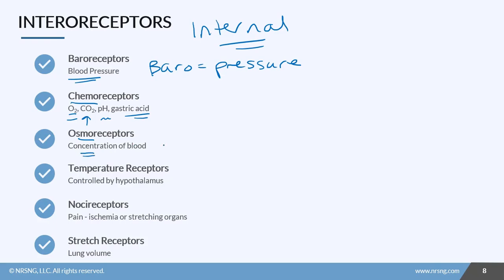Now osmoreceptors detect concentration of the blood, so basically they're looking at how much water is in there. Is there enough water, is there too much water? Temperature receptors are going to be able to detect our internal body temperature, so we're talking about core temp here. And they're going to send that signal to the brain. And our temperature is controlled by our hypothalamus. Then we also see nociceptors. Nociceptors are our pain receptors. So we can see these in the skin, but also inside the vital organs. So if your organs are stretching or if they have a lack of blood flow or ischemia, you're going to get pain receptors from those nociceptors.